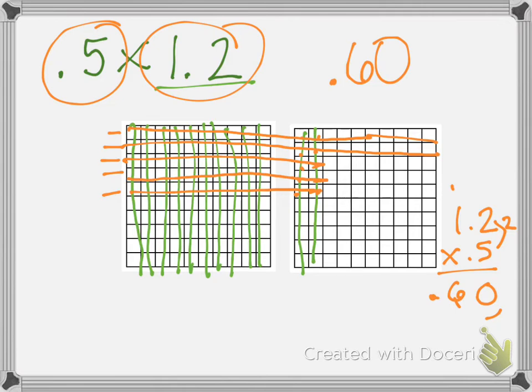So that was a quick tutorial on how to model decimal by decimal multiplication using the hundredths grid as a model.